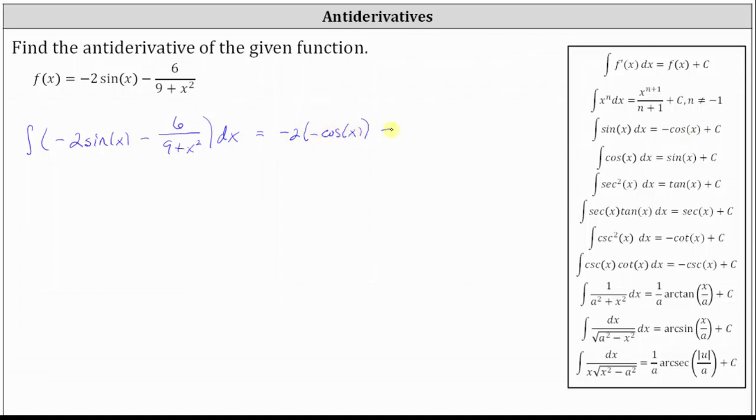Then we have minus the antiderivative of six divided by the quantity nine plus x squared. This one's a little more challenging.